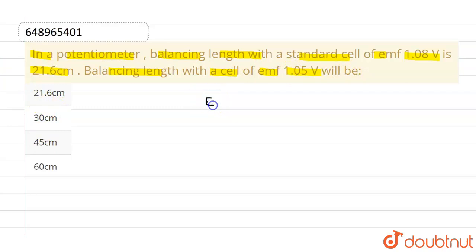Now, we know the standard formula, which is E1 standard EMF divided by balancing length equals potential of second cell divided by balancing length for this particular cell.